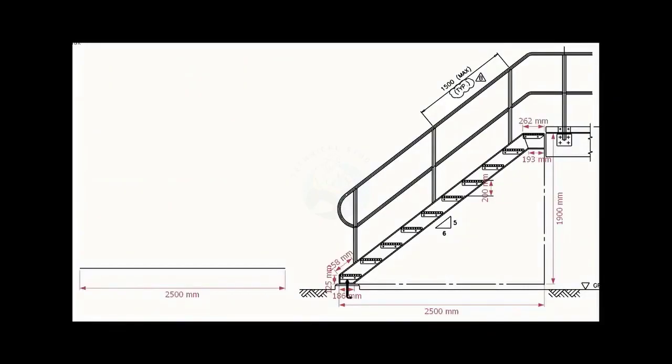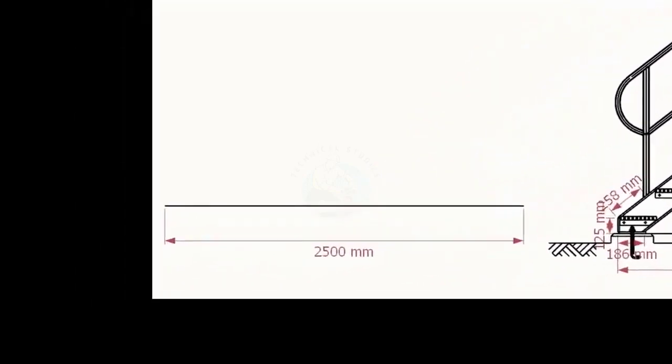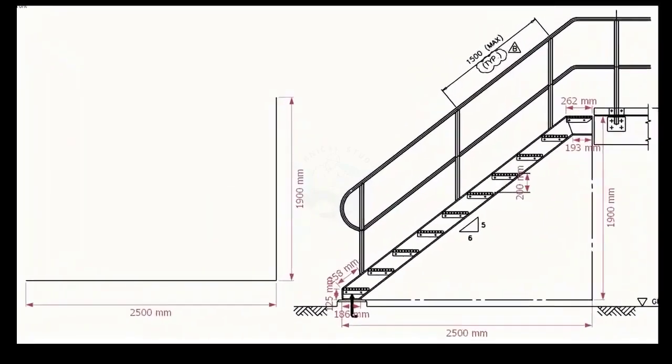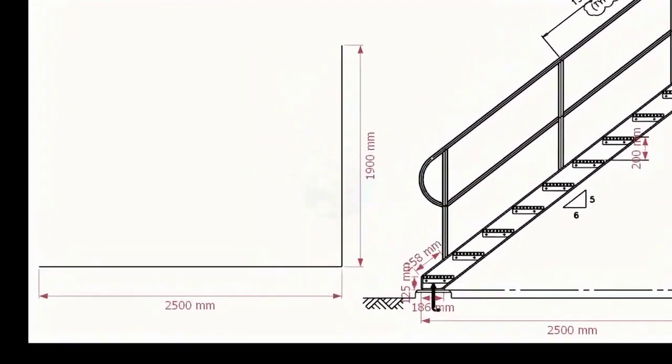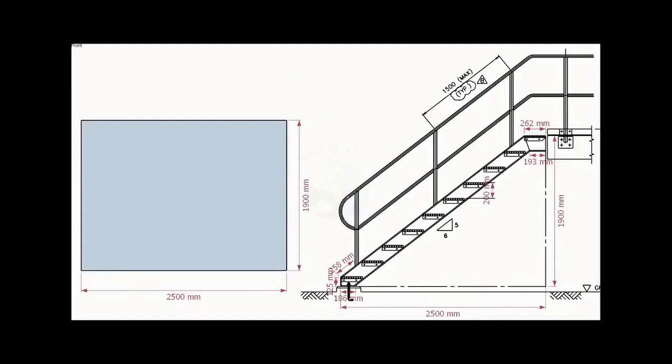Let us start a layout on a leveled plate or platform. Draw the bottom length 2500 millimeters. Draw the width 1900 millimeters. Make sure the included angle is 90 degrees. Let us complete the rectangle.